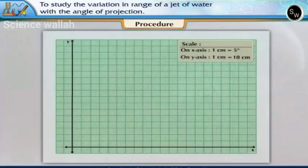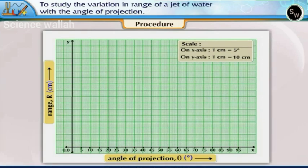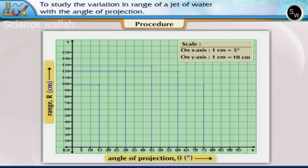Let us draw a graph of range R versus angle of projection theta. Take angle along the x axis and the range along the y axis. Take suitable scales. Plot the points and draw a smooth curve.